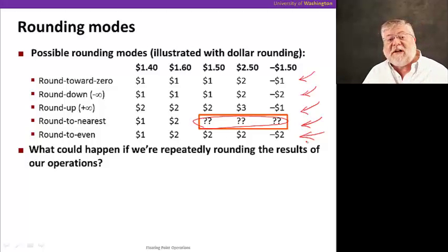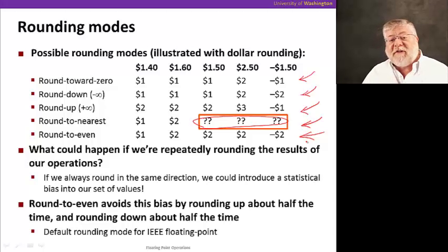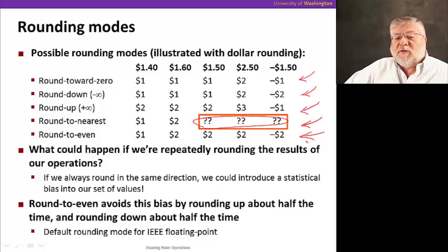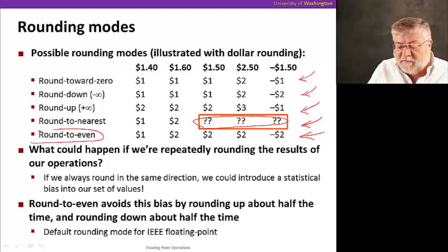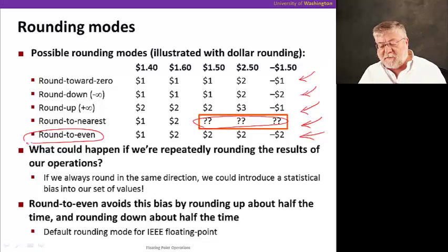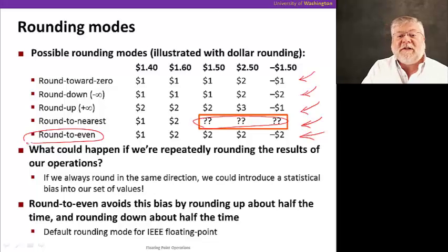If we can repeatedly round results of our operations, these errors are gonna start to accumulate. And if we always round in the same direction, we could introduce a statistical bias into our set of values. To avoid this, the IEEE floating point standard uses a rounding mechanism closest to round to even. And that's to get about half of them rounding up half the time and half of the time rounding down to avoid that bias if we repeatedly round the numbers.